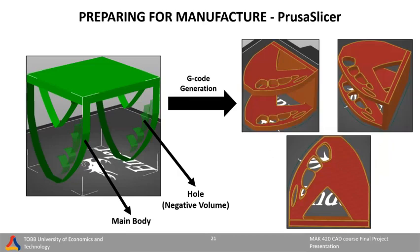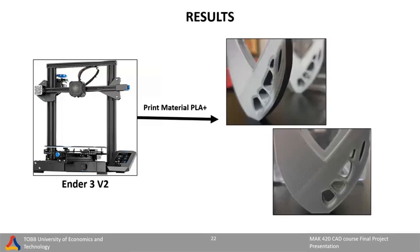After comparing the landing gear designs from both MATLAB and Fusion 360, it was decided that the MATLAB design will be manufactured to demonstrate the results of the project. Manufacture of the MATLAB design was done by first generating a G-code on the PrusaSlicer application. On the left side, we can see the main body of the landing gear with the holes as negative volumes. After that, the G-code was sent to the printer. An Ender V2 3D printer was used to print the landing gear MATLAB design, with PLA+ as the print material. Here are some close-up shots to see the details of the landing gear.